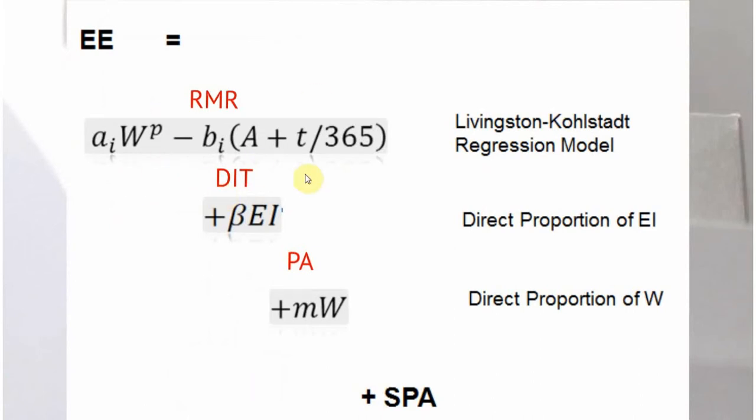Each of these terms have models that you can place in them. RMR, for example, we use the Livingston-Kohlstadt regression model because it had a scaling exponent as a function of body weight. However, you could use Mifflin St. Jeor. Kevin Hall uses a different model that has body composition in it. Others have used Mifflin St. Jeor or Harris Benedict. All of us use a similar term for dietary-induced thermogenesis as a direct proportion of intake.